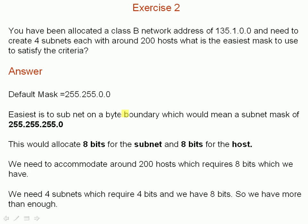Exercise 2: we've got a class B network address of 135.1.0.0. We need to create 4 subnets, and each would have around 200 hosts. What's the easiest mask to use? There's the default subnet mask, and the answer is the easiest is to do it on a byte boundary. So the easiest mask to use is 255.255.255.0. This allocates 8 bits for the subnet and 8 bits for the host. 8 bits gives us 256 possible subnets — we only need 4 — and 8 bits for the host gives us 254 possible host addresses, and we only need 200. So that mask would work.